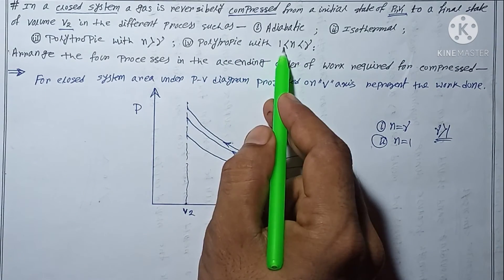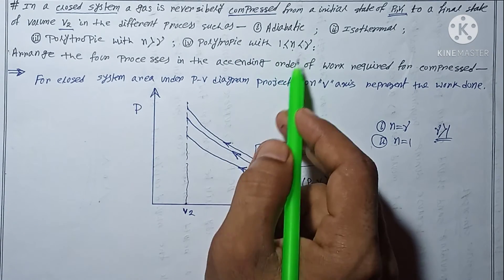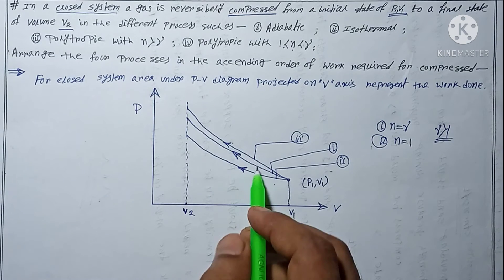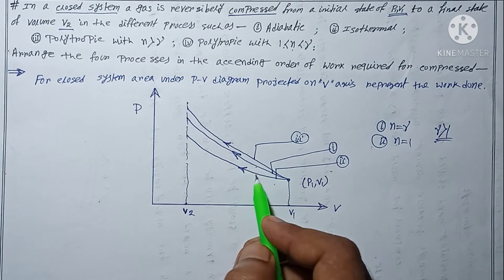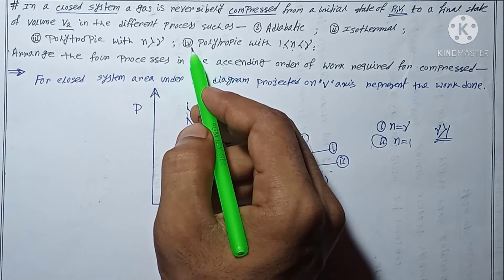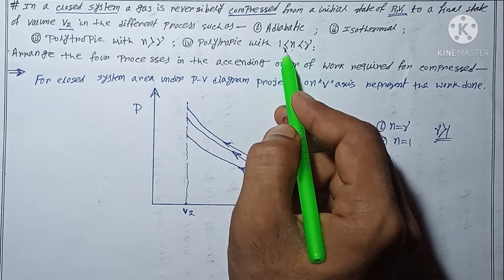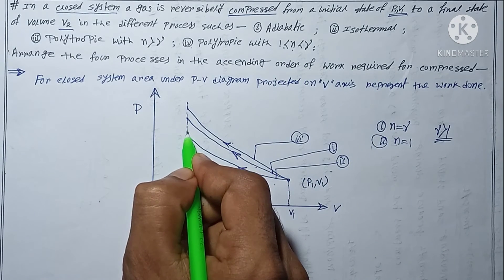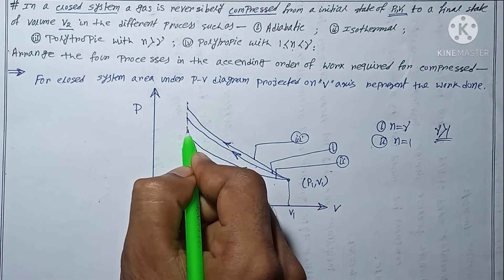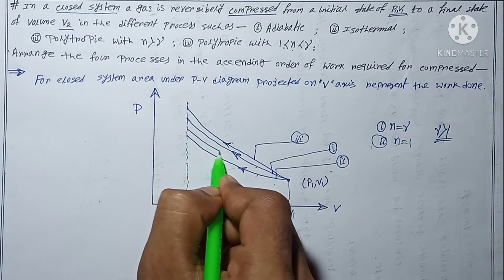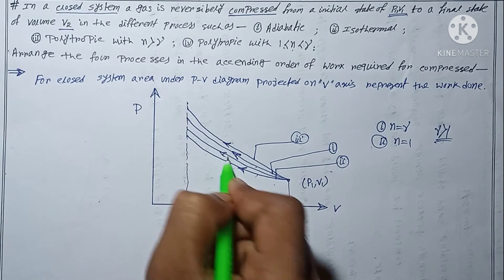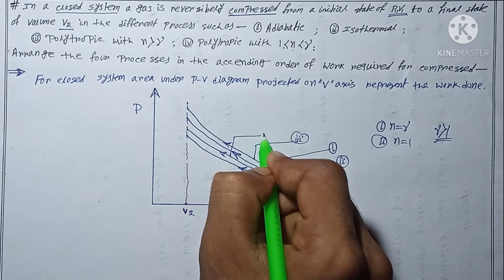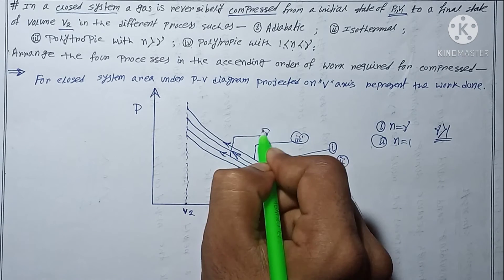Process number four is polytropic with 1 less than n less than gamma. Process 1 has n equal to gamma and process 2 has n equal to 1, so process 4 has an n value between 1 and gamma, meaning its curve lies between those two curves. This is process number four.